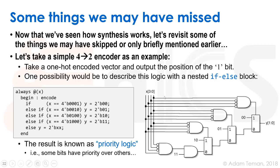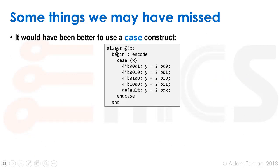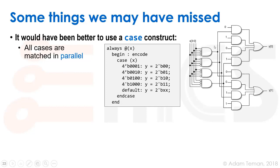That may be something we wanted to do, but often it was by accident. If we had used the case construct — for example, always at x, case x, and then we have all these options — cases are usually parallel. You can also tell the synthesizer via pragmas or synthesis tool options to treat this as parallel. So if we did that, all of these things are equal and in parallel, and we get this type of logic if we go and implement what it says.